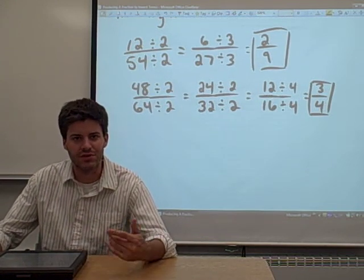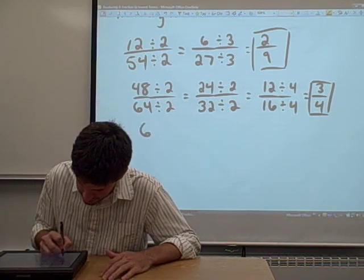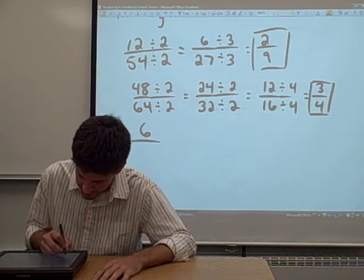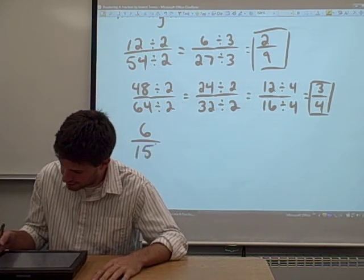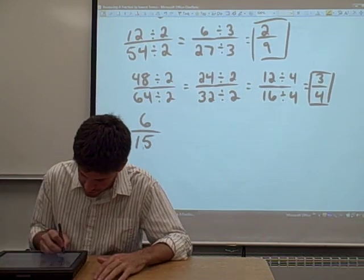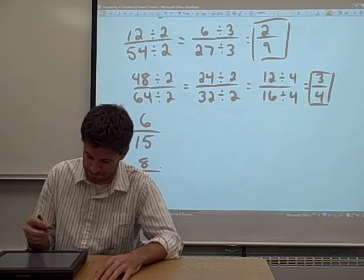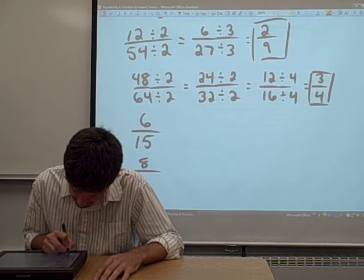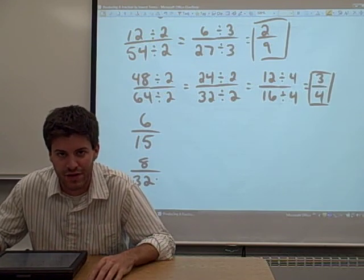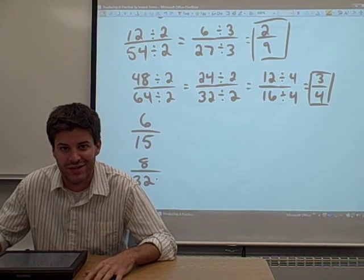So let's try that one more time. Try this one on your own. See how you do. Try 6 over, oh I don't know, 15. And while you're at it, you may as well try another one. Try 8 over 32. Try to reduce both of those fractions to lowest terms. Hit pause on your browser and come back and see how you did.